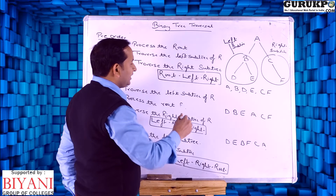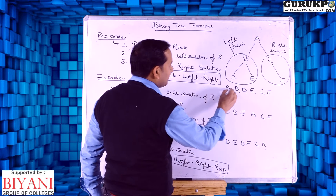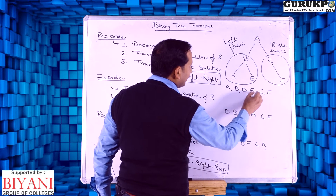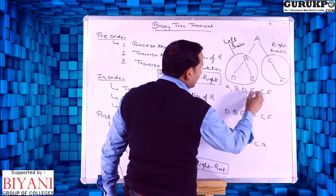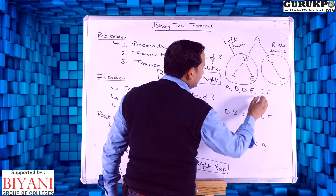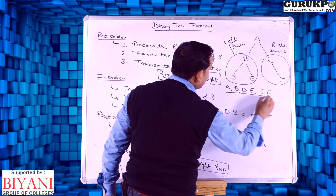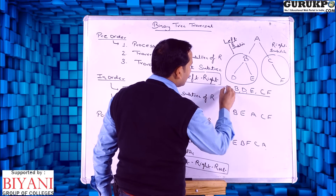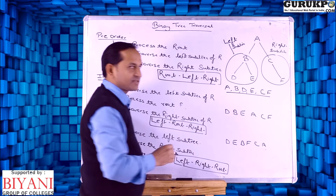So the entire pre-order traversal list is A, B, D, E, C, F. This is the final answer of pre-order traversal.